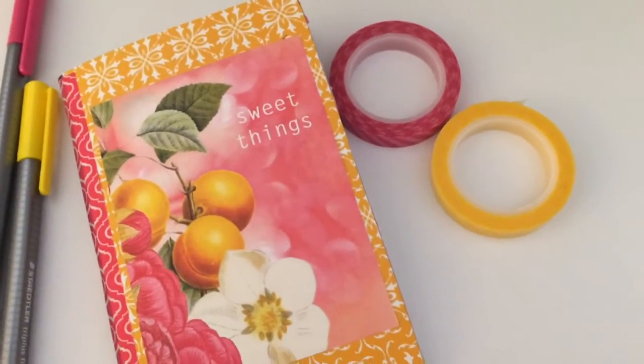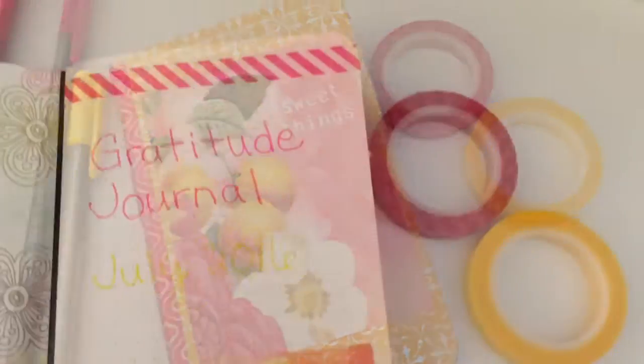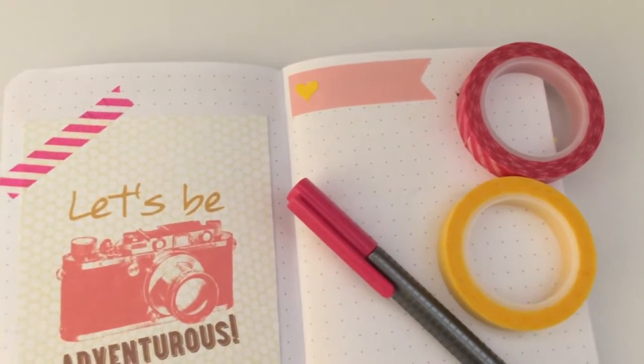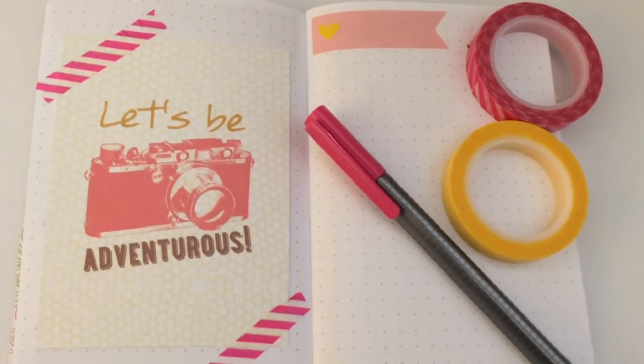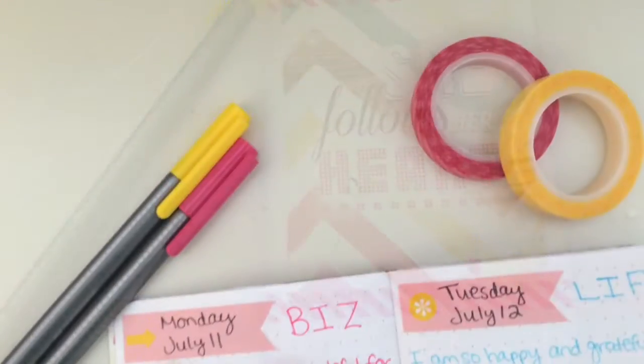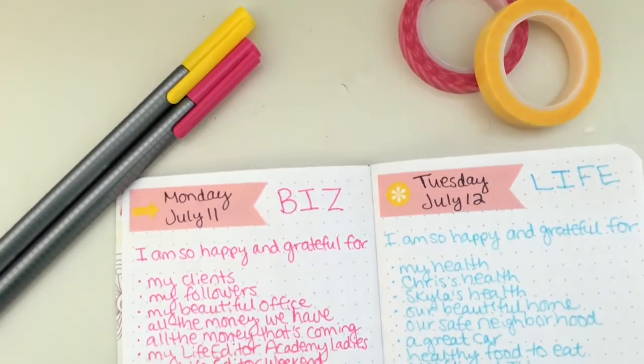And here's the finished gratitude bullet journal. There's a lot of ways that you can make this your own. Use different kinds of scrapbook paper. Maybe add some stickers, different colors that match your own color scheme. You can even put pictures in here too.